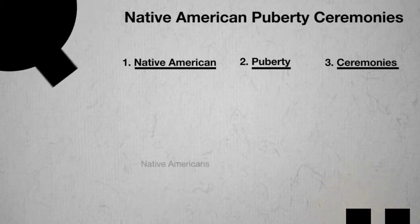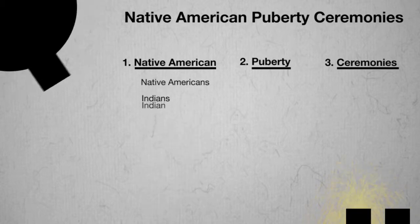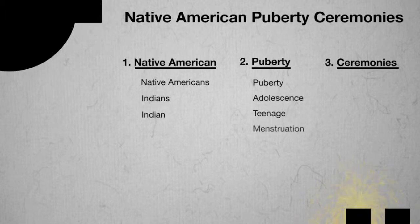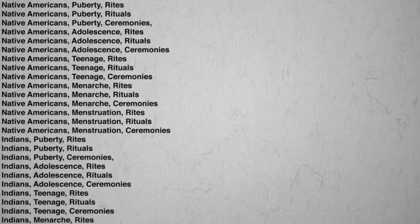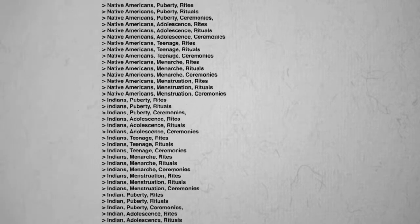What you didn't learn in that video was how to use those search terms in an actual search. These three lists of terms represented words that we believed might appear in articles on our topic — Native American puberty ceremonies. The words, however, could appear in any number of combinations. For example: Native Americans puberty rites, Native Americans puberty rituals, Native Americans puberty ceremonies, Native Americans adolescence rites, and so forth. Even a short list of search terms can generate an unwieldy number of combinations — in this case 45 — and it would be prohibitively difficult to search them all separately.